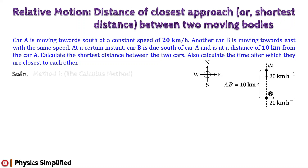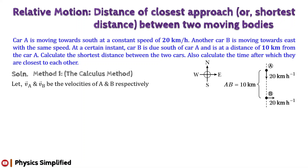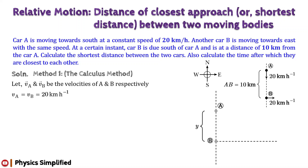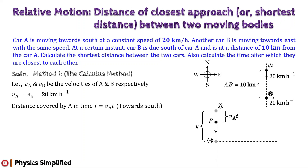Let us now solve the problem. First, we will use the method of calculus. We consider the velocities of cars A and B as vector v_A and vector v_B respectively. By problem, the magnitude of both v_A and v_B is 20 km/h. Consider the figure. Since car A moves towards south, its new position after time t is denoted by the point P. The distance covered by car A in time t, given by AP, is equal to v_A × t.